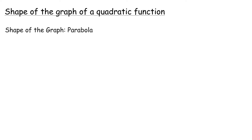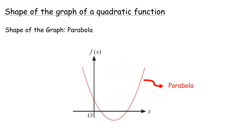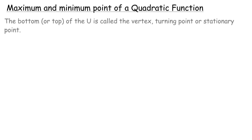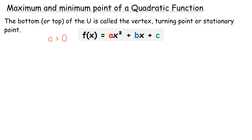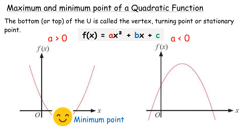The shape of the graph is a parabola. Parabolas have a shape that resembles the letter U. Maximum and minimum point of a quadratic function: the bottom or top of the U is called the vertex, turning point, or stationary point. The vertex of a parabola opening upward is called the minimum point if a is greater than zero. The vertex of a parabola opening downward is called the maximum point if a is less than zero.